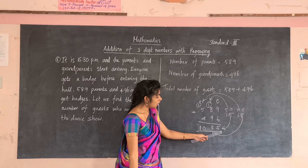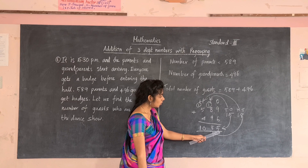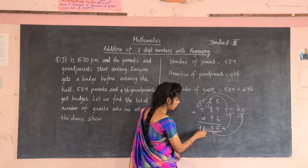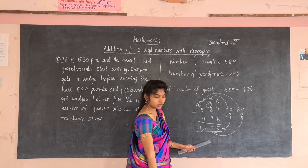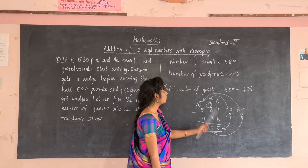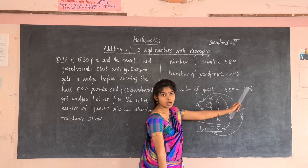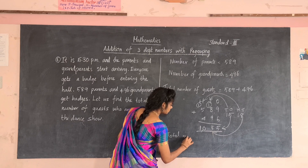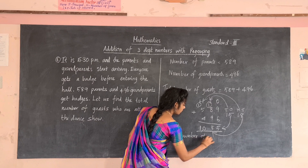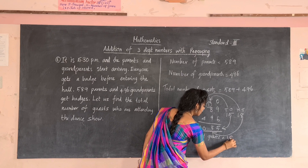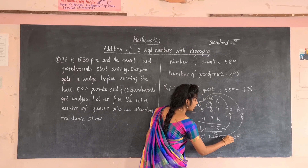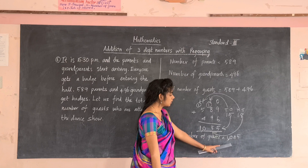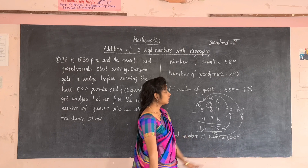Now the number has four digits, so write place values up to thousands: ones, tens, hundreds, and thousands. Read the number: 1,085. That is the answer by adding the parents' number and the grandparents' number. The total number of guests is 1,085. We place a comma between hundreds and thousands because it is standard form.